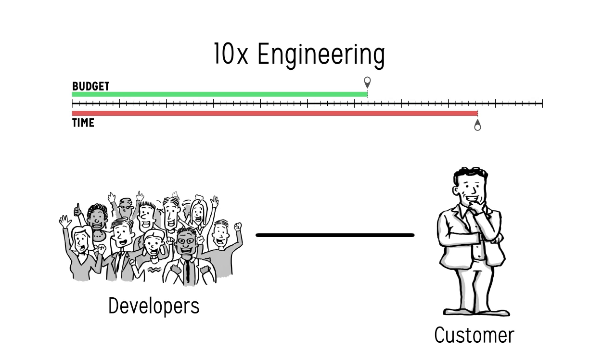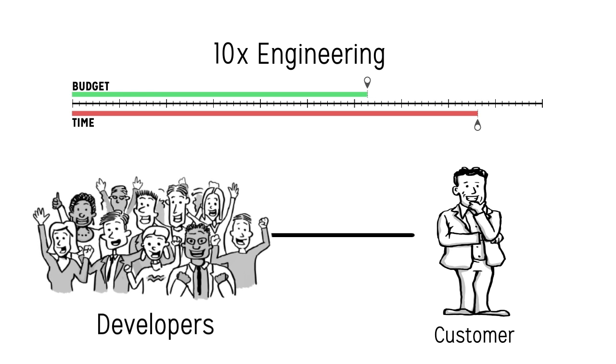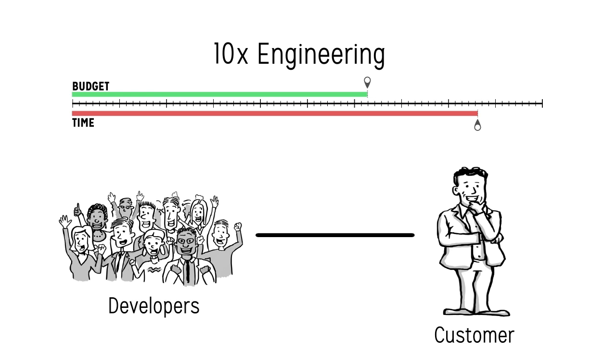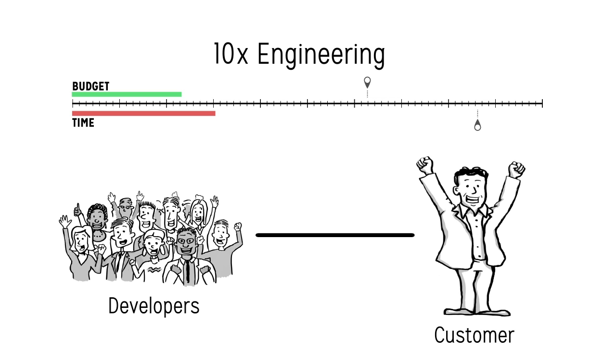So 10X then, when we put it all together, 10X means we have all those components that yes, we're on time, we're on budget, desired functionality, desired quality level, the team's happy, but we're doing it at a shorter time and a lower budget. That's what it means to be 10X.